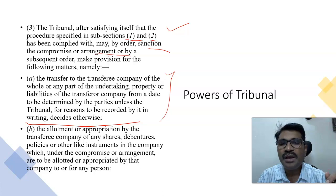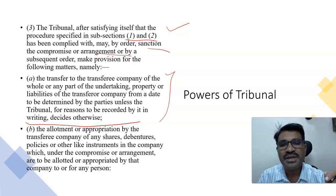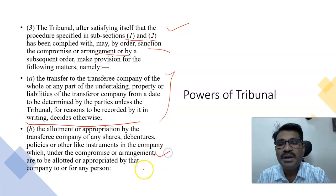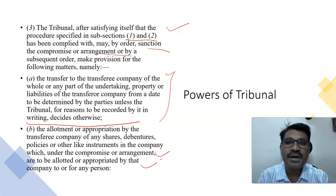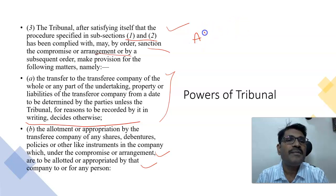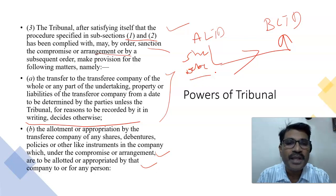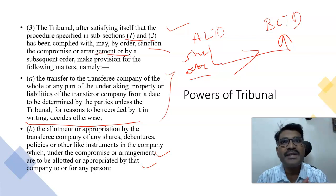Point (b): the allotment or appropriation by the transferee company of shares, debentures, policies, or other like instruments in the company — that means all the issues of A Limited will be transferred to B Limited, whether shares, debentures, or other types of assets. For example, consider the Vodafone and Idea merger — both exist and we now have the company Vodafone Idea. Another case is Hindustan Lever Limited being renamed to Hindustan Unilever Limited.